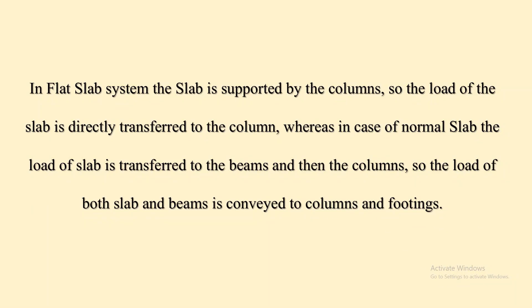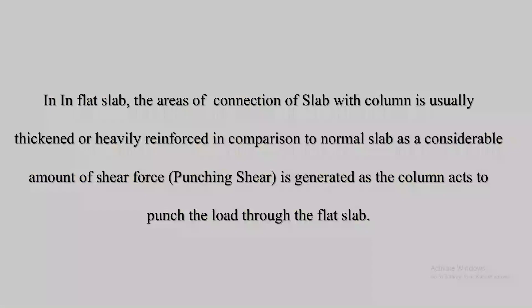In a flat slab system, the slab is supported by the columns, so the load is directly transferred to the column. Whereas in a normal slab, the load is transferred to the beams first and then to the columns, so the load of both slab and beams is conveyed to columns and footings.